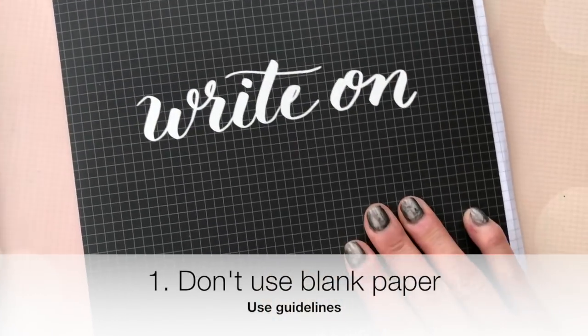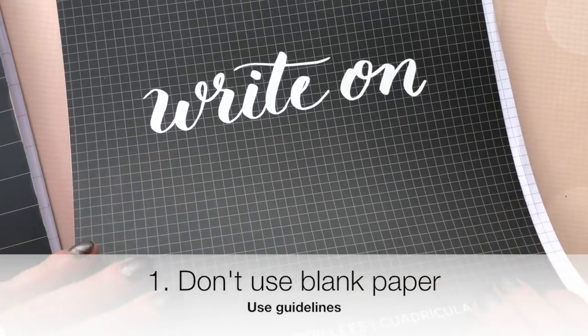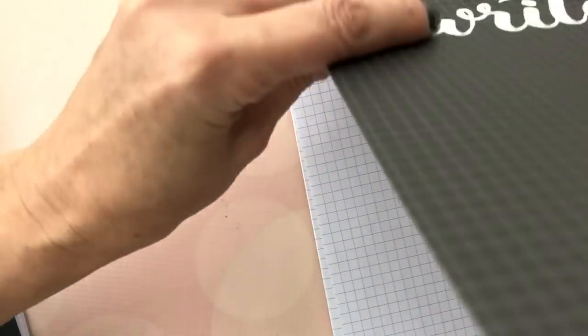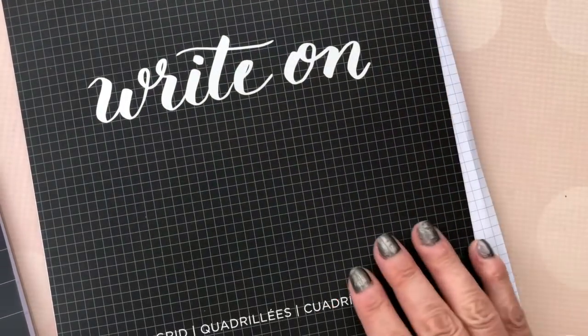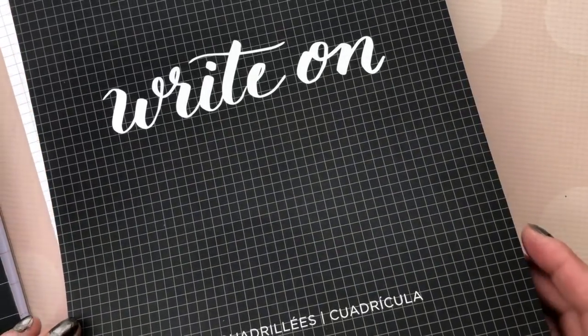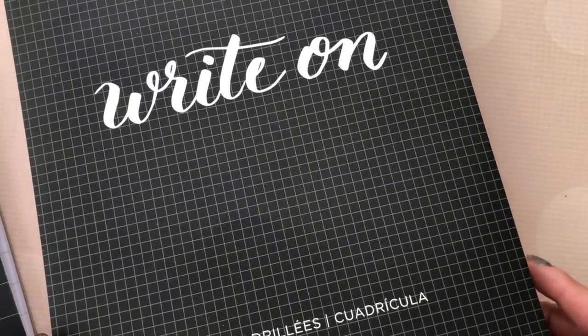So the first mistake beginners make is they use blank paper. Please do not practice with blank paper. Use a grid pad or dot or lined, whatever it is, it should have lines for your lettering to be guided by.